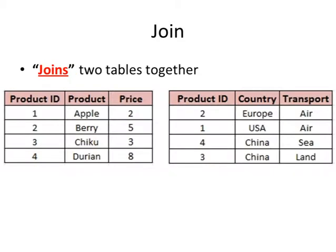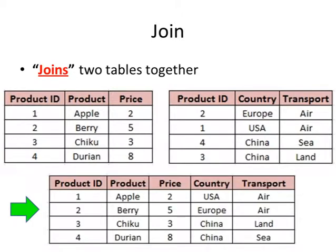The join operator, as the name suggests, joins two tables together. Assuming you have these two tables shown on the screen, if we perform a join operator, you will get the table shown below. Notice that we have the common information on the product ID, which is the primary key in the final table, and the combination of the four fields: product, price, country, and transport together.